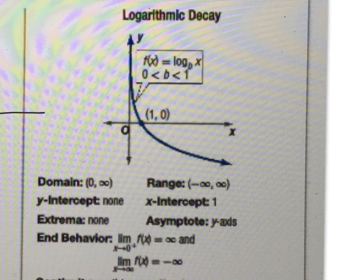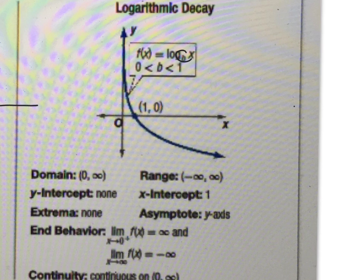Let's look at the other side. If it's decay, meaning this number for the base is less than 1, the graph goes down instead of up. A lot of this stuff is still true. Domain's the same. Range is the same. The x-intercept is the same. Asymptote's the same. End behavior is the same, basically. Continuity's the same. The only difference is it's decreasing instead of increasing.